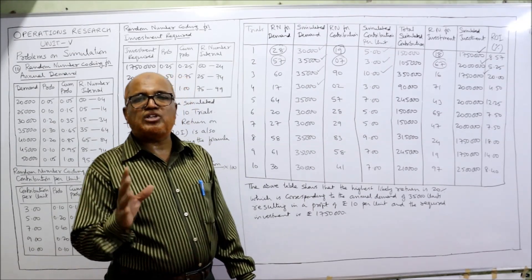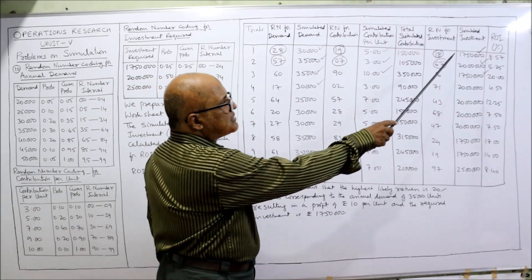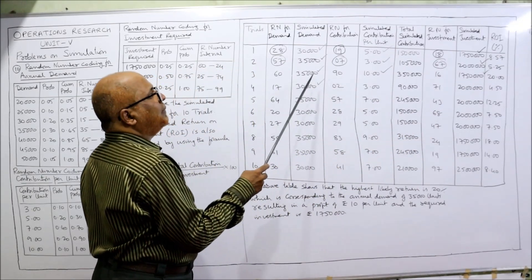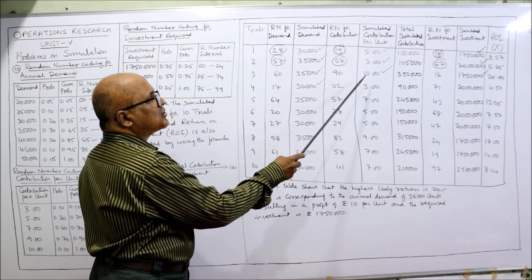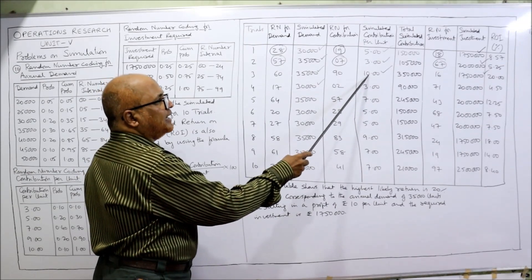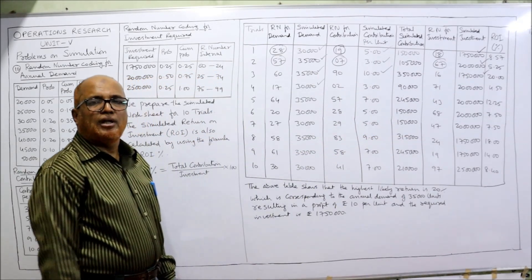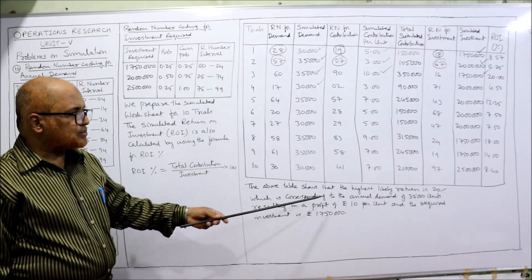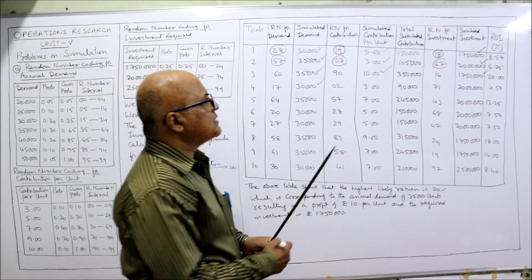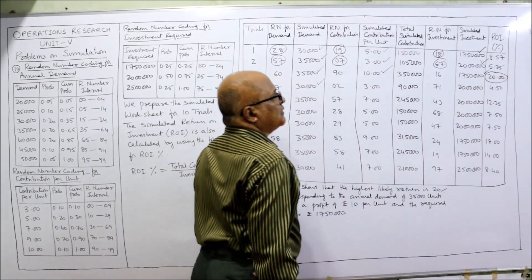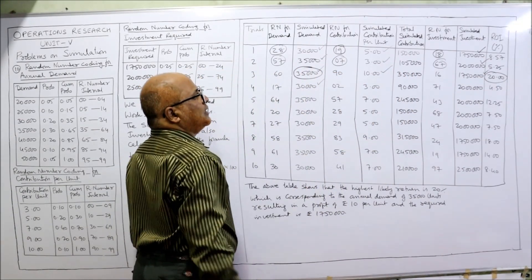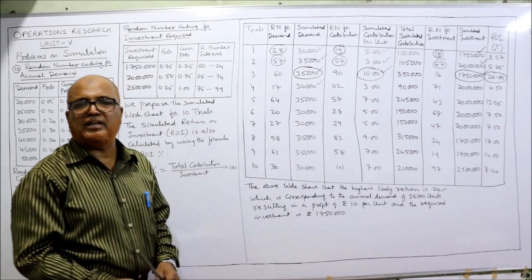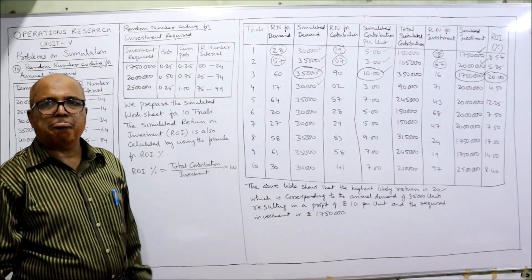Finally, we identify which case gives the highest ROI. The highest ROI is 20%, occurring when annual demand is 35,000 units, contribution per unit is 10 rupees, and investment required is 17 lakh 50,000. The conclusion is: the above table shows the highest likely return is 20%, corresponding to annual demand of 35,000 units, contribution per unit of 10 rupees, and investment of 17 lakh 50,000. That is the optimum investment strategy.